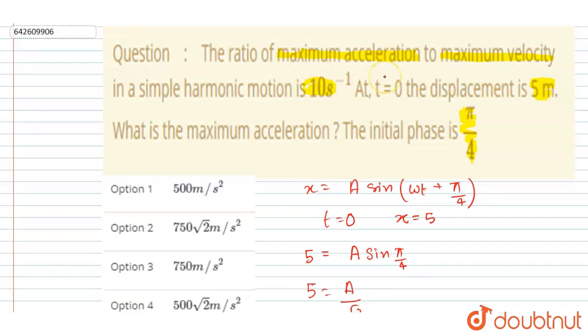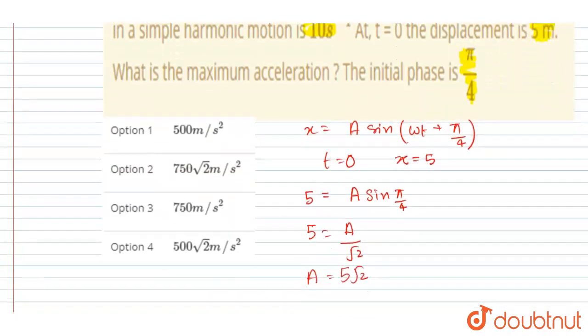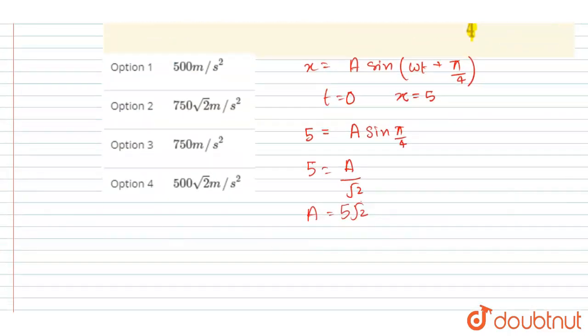So the maximum acceleration in SHM is nothing but ω²A, and maximum velocity is nothing but ωA, right? And the ratio of them is given here: 10. So if I will divide them, you can see the ωA will get cancelled out.